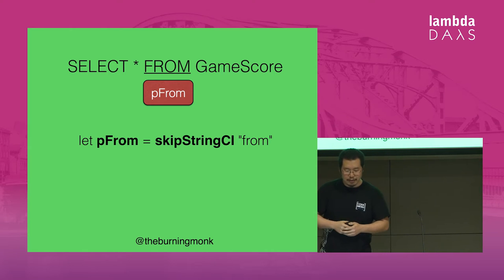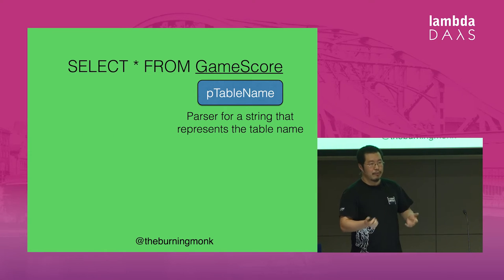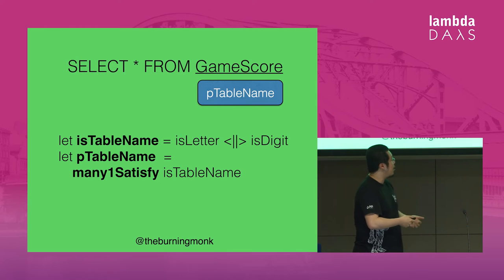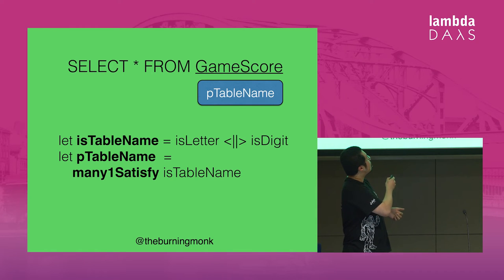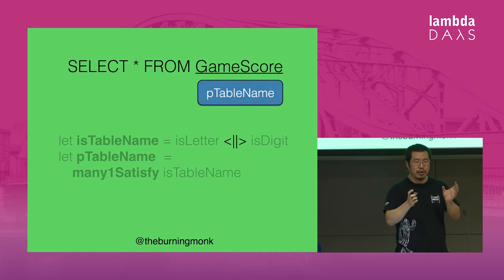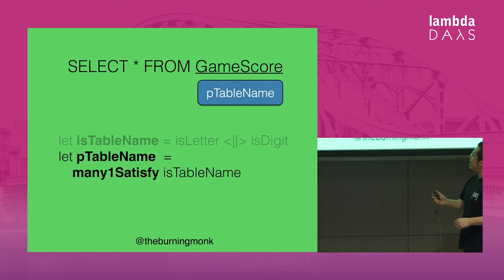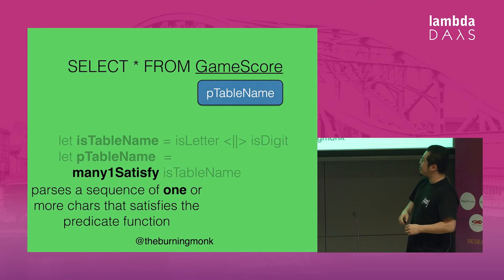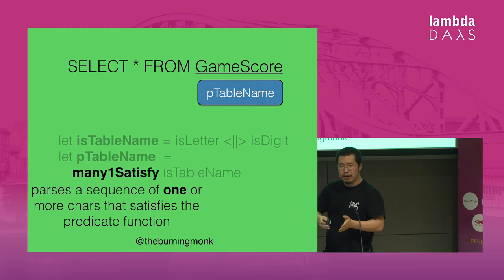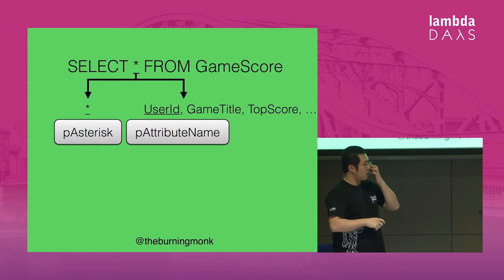For the table name, I know from the spec that DynamoDB requires table names to have only letters and digits. I can build a simple predicate using the built-in predicate functions isLetter and isDigit, and compose them together using a custom combinator with OR semantics. Then to build a parser for a table name, I use manyOneSatisfy, which creates a parser that parses a sequence of one or more characters satisfying my predicate function. For the attributes list, we have two cases: a star or a comma-separated list of attribute names.